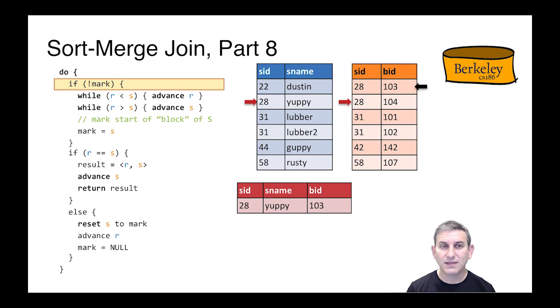When we get called again to do next, we check to see if mark is true. And it is. So we check to see if we have another pair of matching tuples. And we do. So again, we set the result to be the pair. We advance S one further. And we return that result.